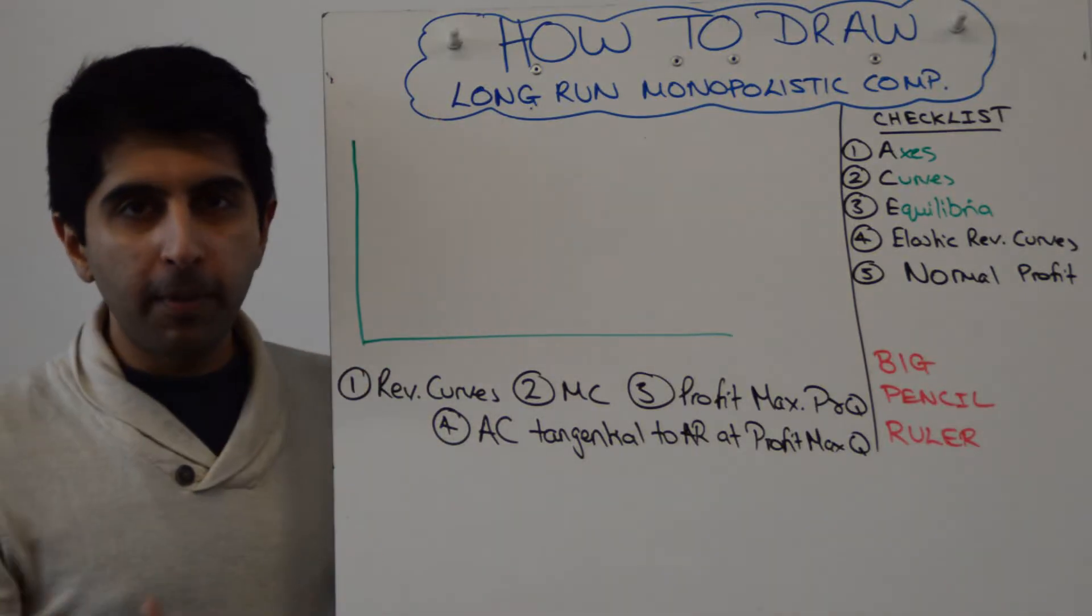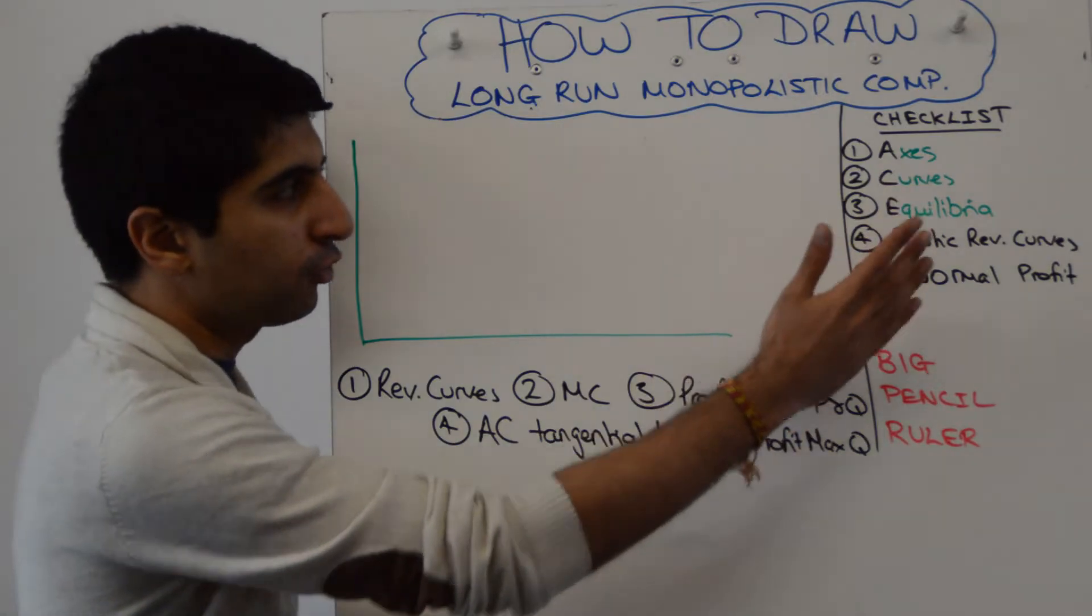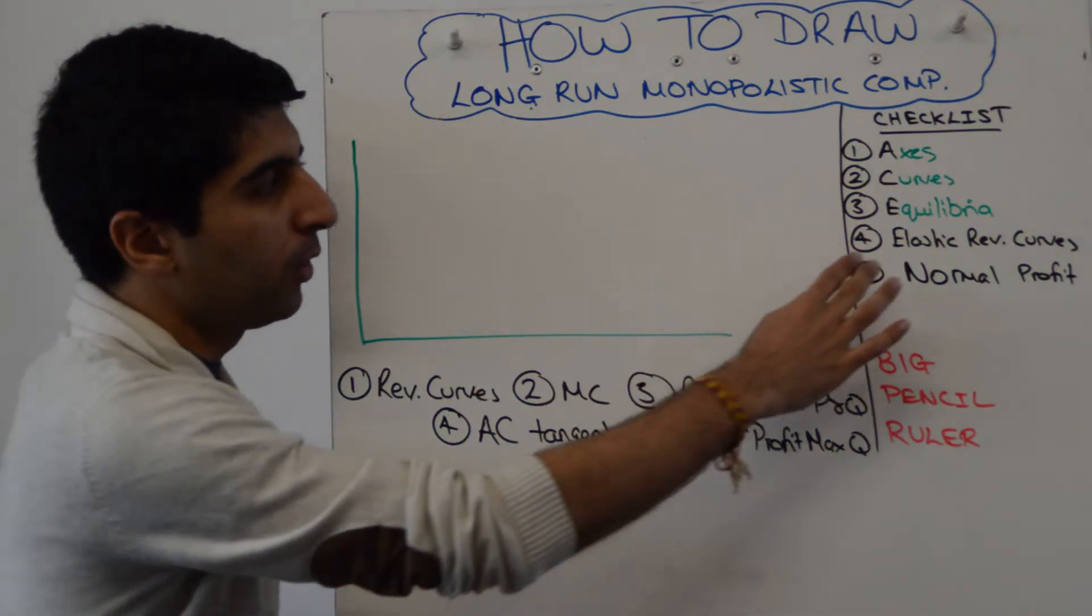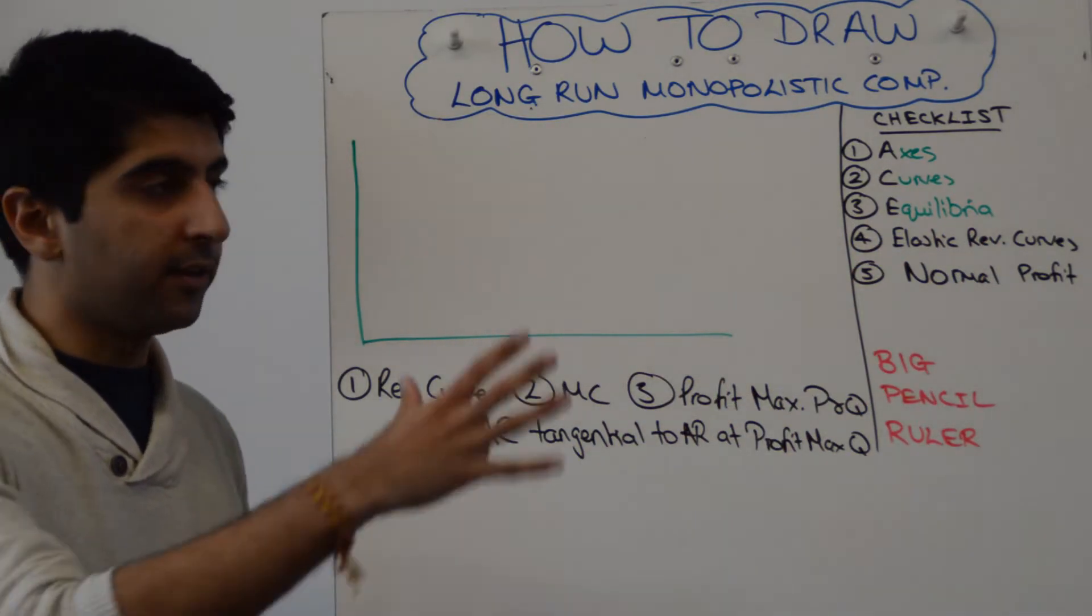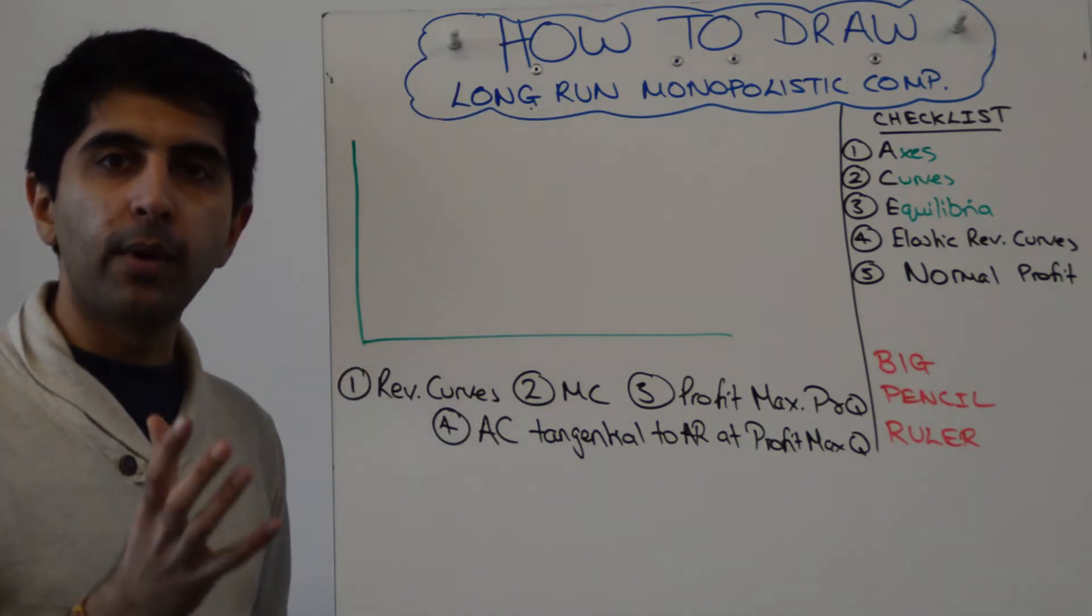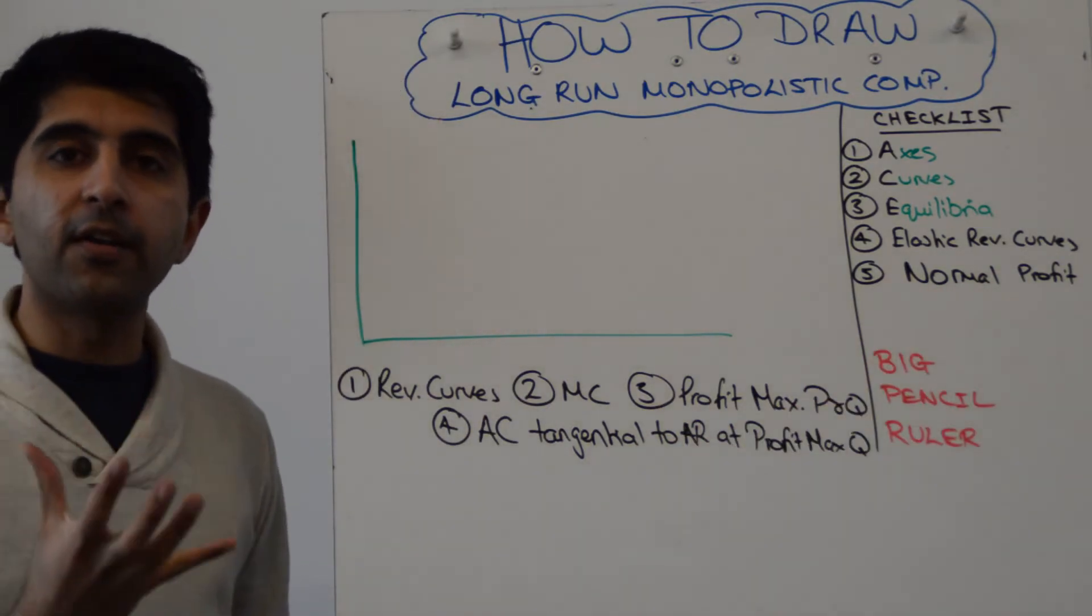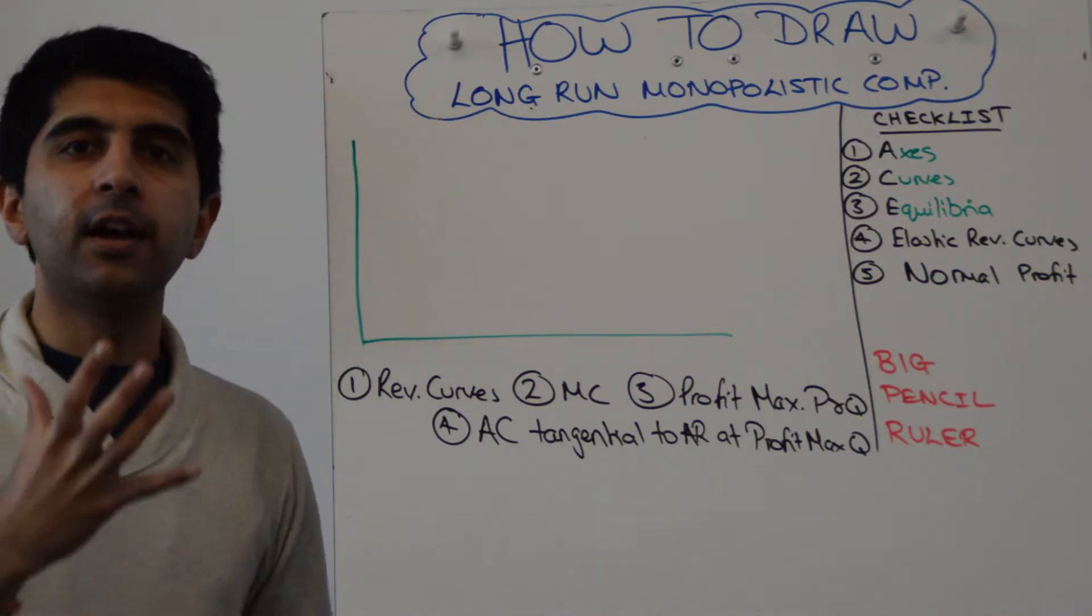Hi everybody, monopolistic competition in the long run. How do you draw the diagram? Let's go straight to our mental checklist. We want to show elastic revenue curves because that's the market structure—slightly differentiated products but nowhere near as much market power as monopoly—and especially normal profit. That's going to be very important to show; that defines the long run in monopolistic competition.